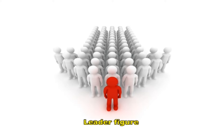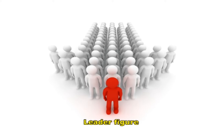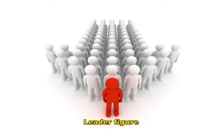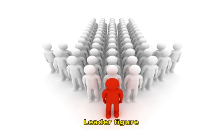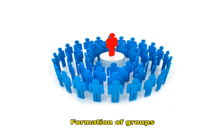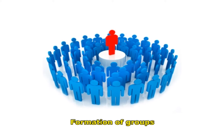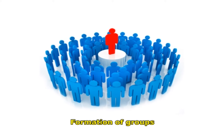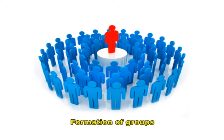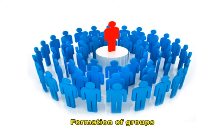Partial or secondary identification is based on the perception of a special quality of another person. This quality or ideal is often represented in a leader figure or a group. A child can identify with a group because he has something in common with that group. This plays an important role in the formation of groups and contributes to the development of character. The ego is formed by identification with the group, promoting social life.